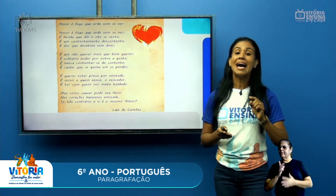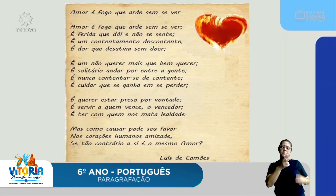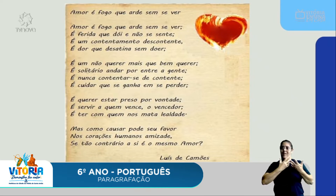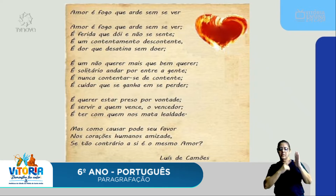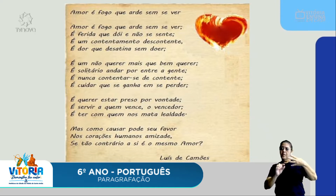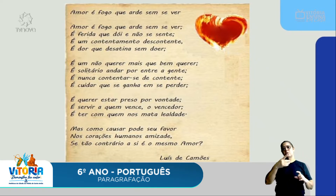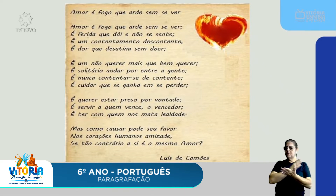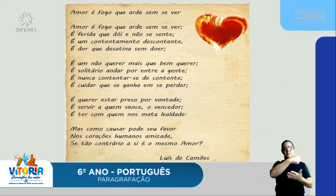Analisa essa imagem: é uma poesia chamada 'O Amor é Fogo que Arde Sem Se Ver', do Luís de Camões. Dá uma olhada nessa estrutura. Essas quatro primeiras linhas a gente chama de estrofe — por que não de parágrafo? Porque é uma poesia. Toda poesia não contém parágrafos, ela contém estrofes. E percebe que as estrofes são escritas com inicial maiúscula — toda palavrinha que está iniciando a estrofe está com letra maiúscula.